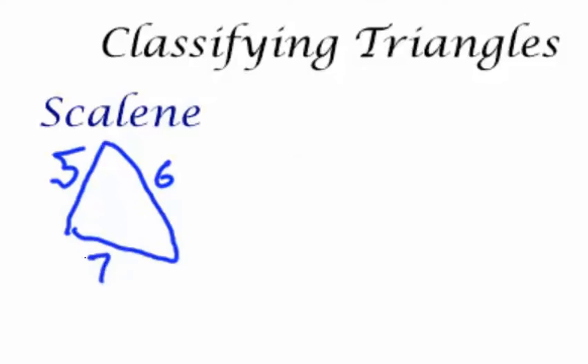Then I talk about an isosceles triangle. A triangle with two sides that are equal. In this case, these two sides are six and six and one side that is not.